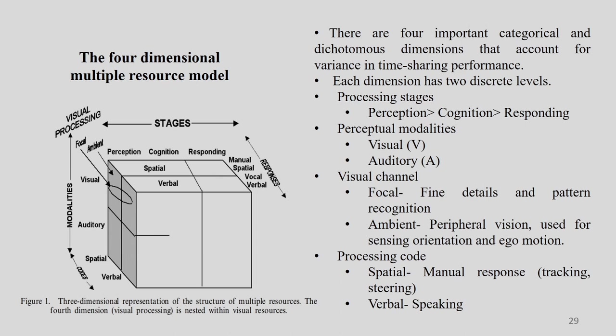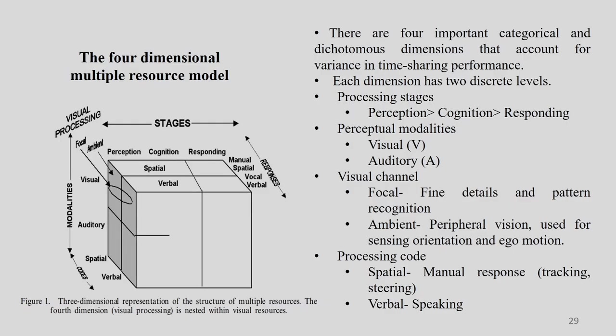The first dimension is processing stages. When we have some kind of information, we first perceive it and then respond to it. Here we say: perception, then recognition or cognition, and then responding. In this particular figure, you can see that perception and cognition come first, then responding.